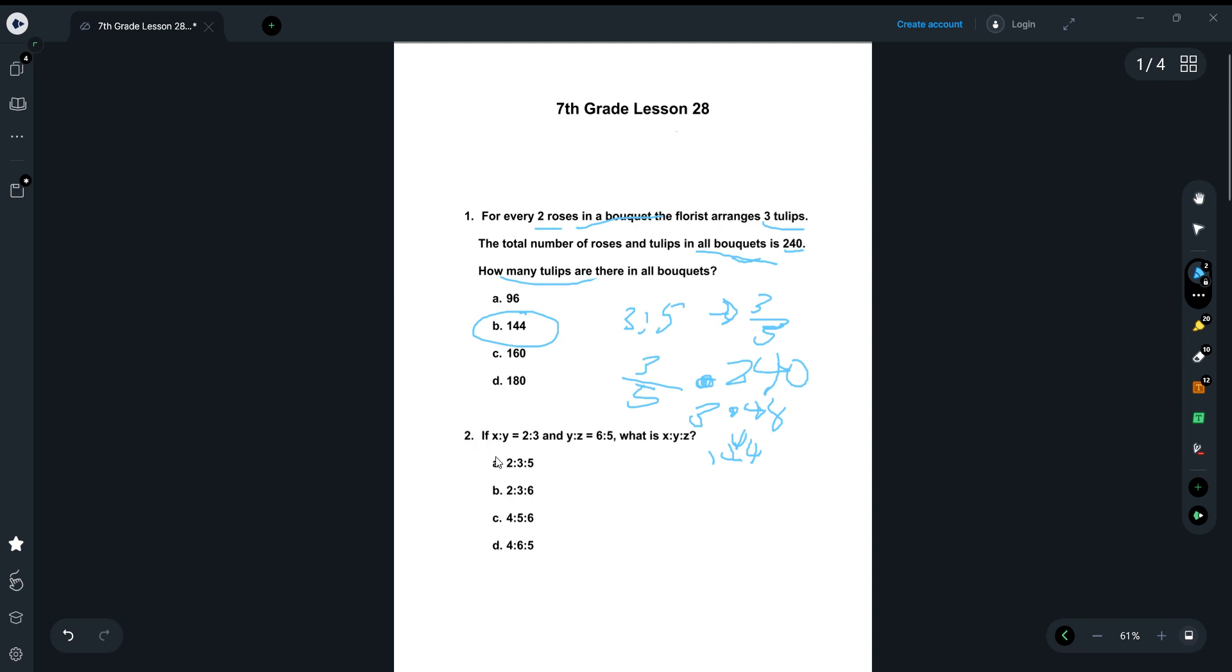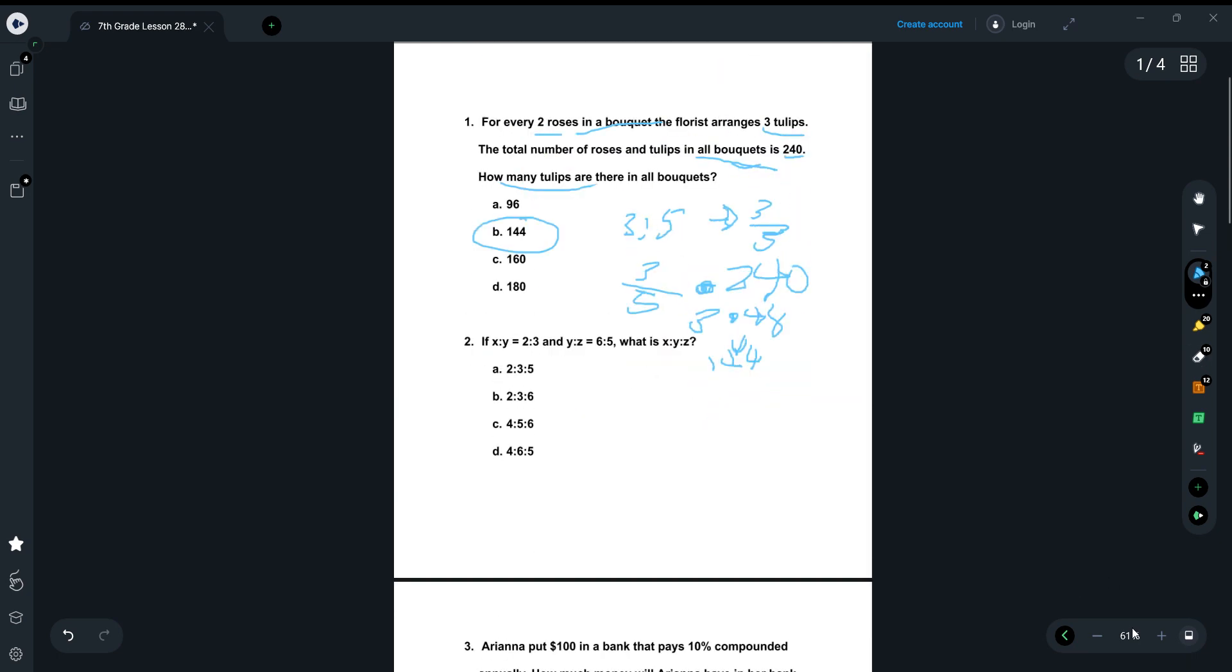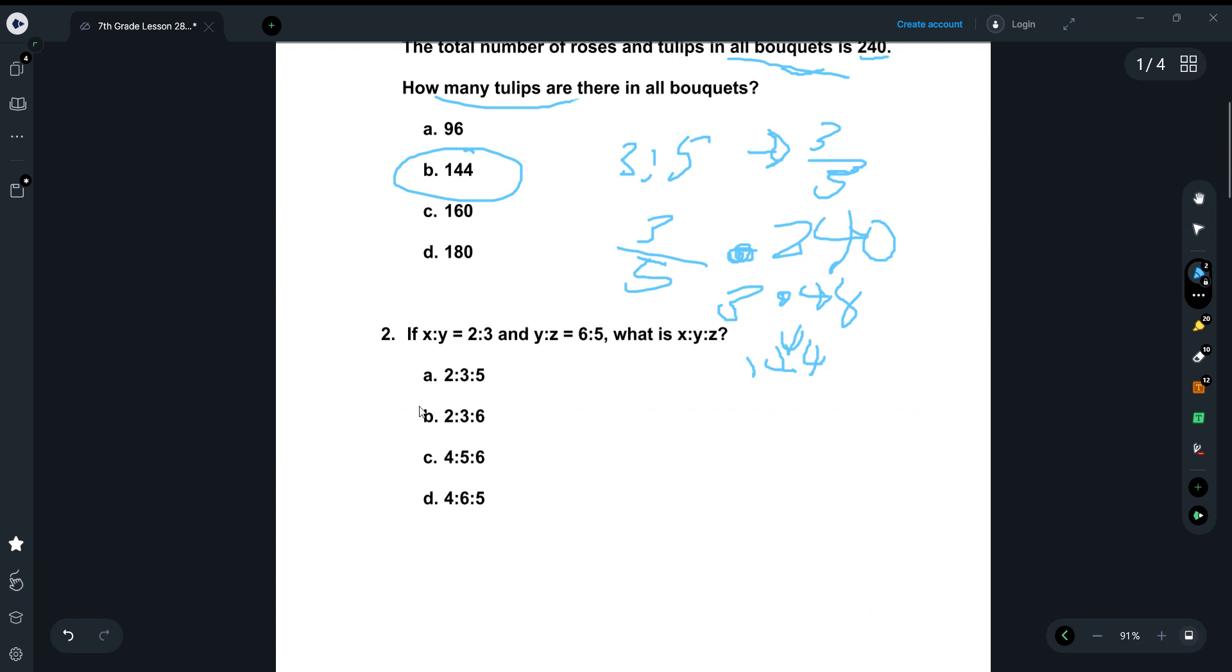Number two, if x to y equals two to three and y to z equals six to five, what is x to y to z? Okay, so we can see that there's one common thing right here in between these two. So between these two, there's one common letter, and it's y, right? y is the common letter, so a variable.